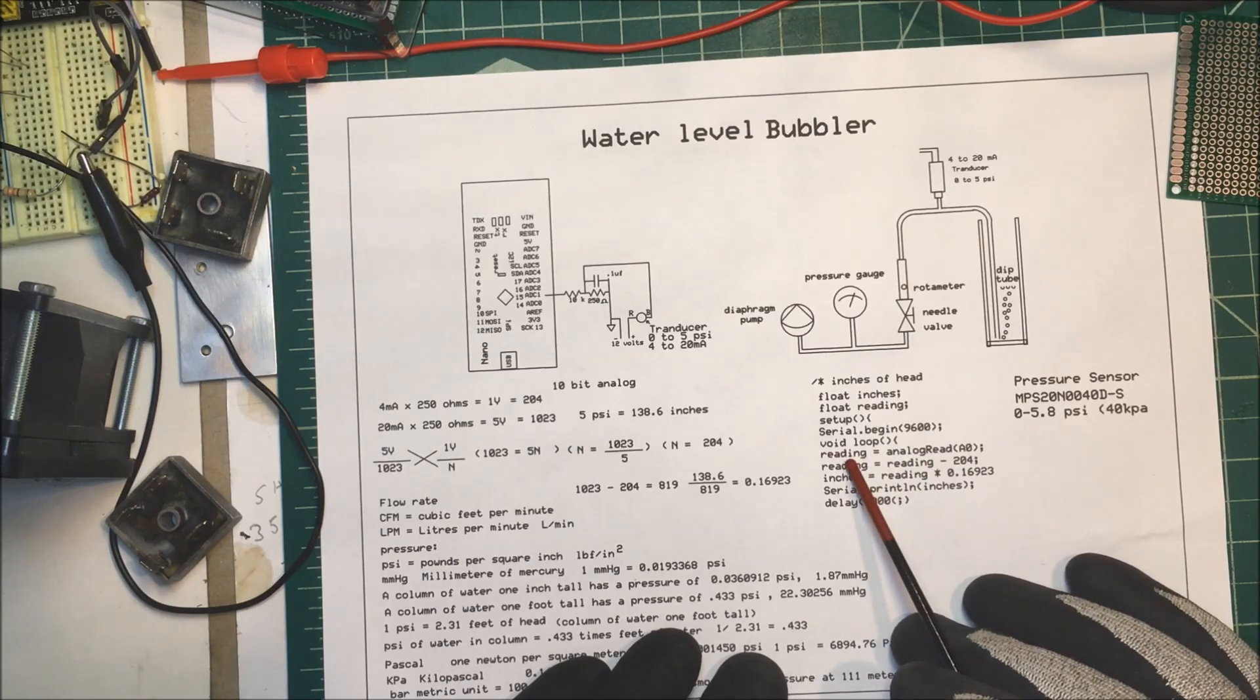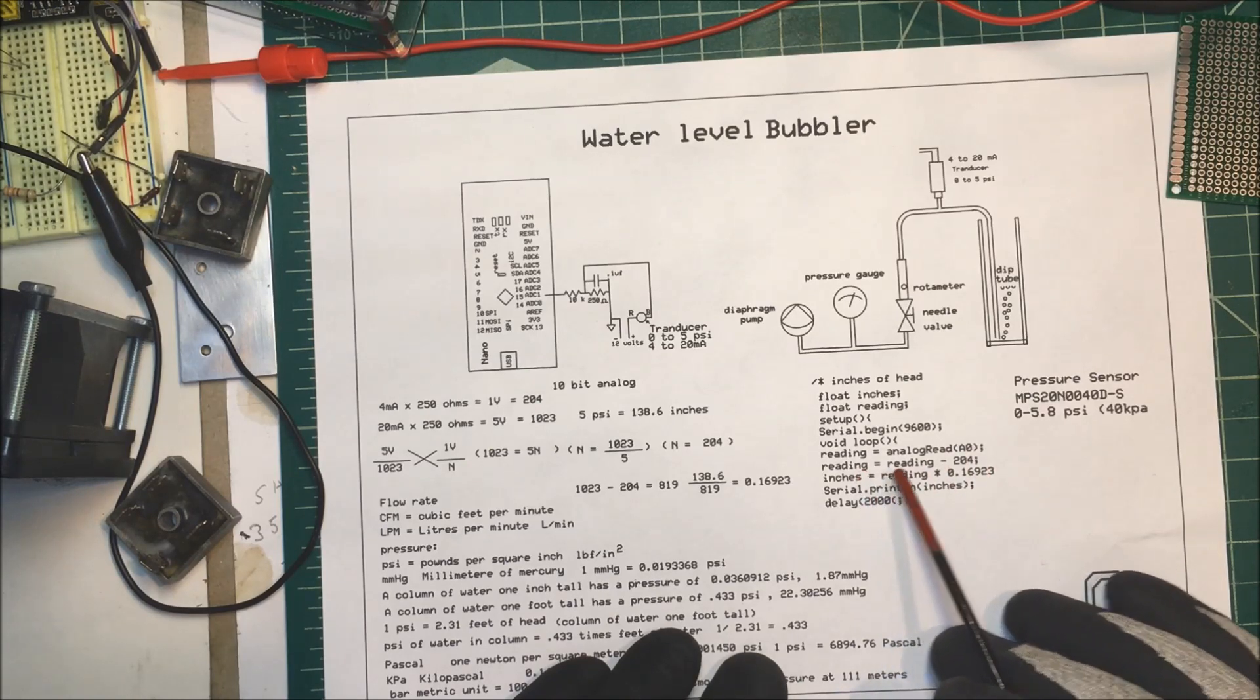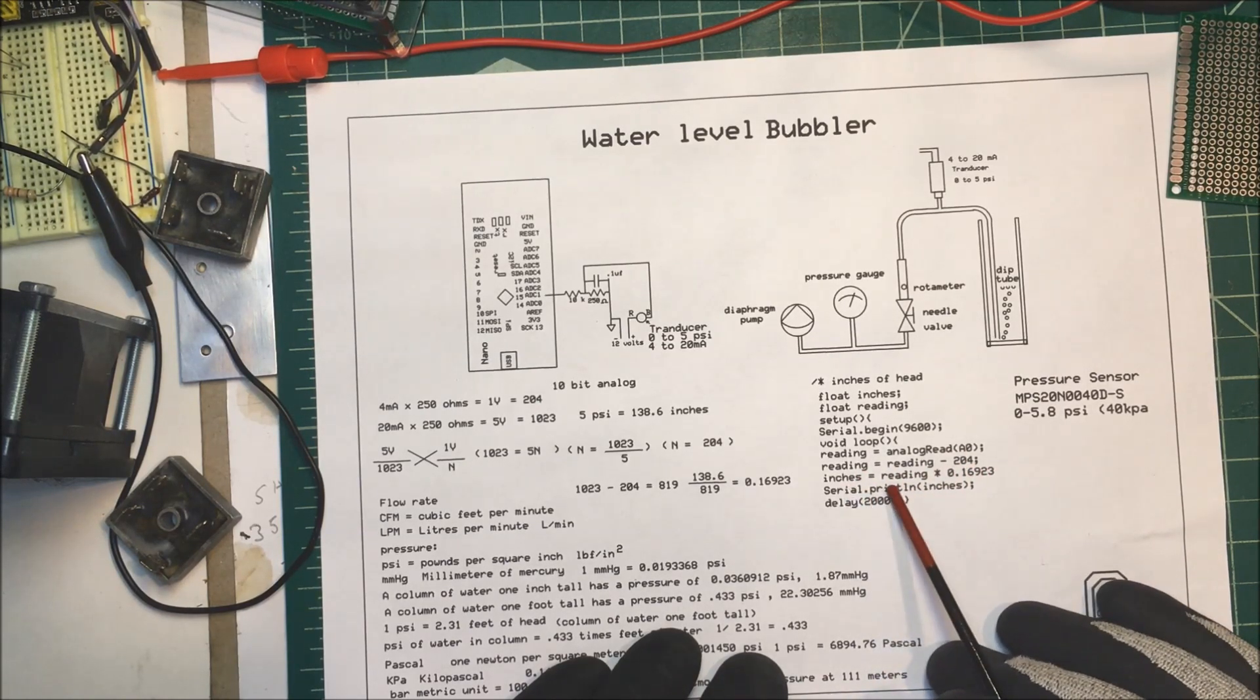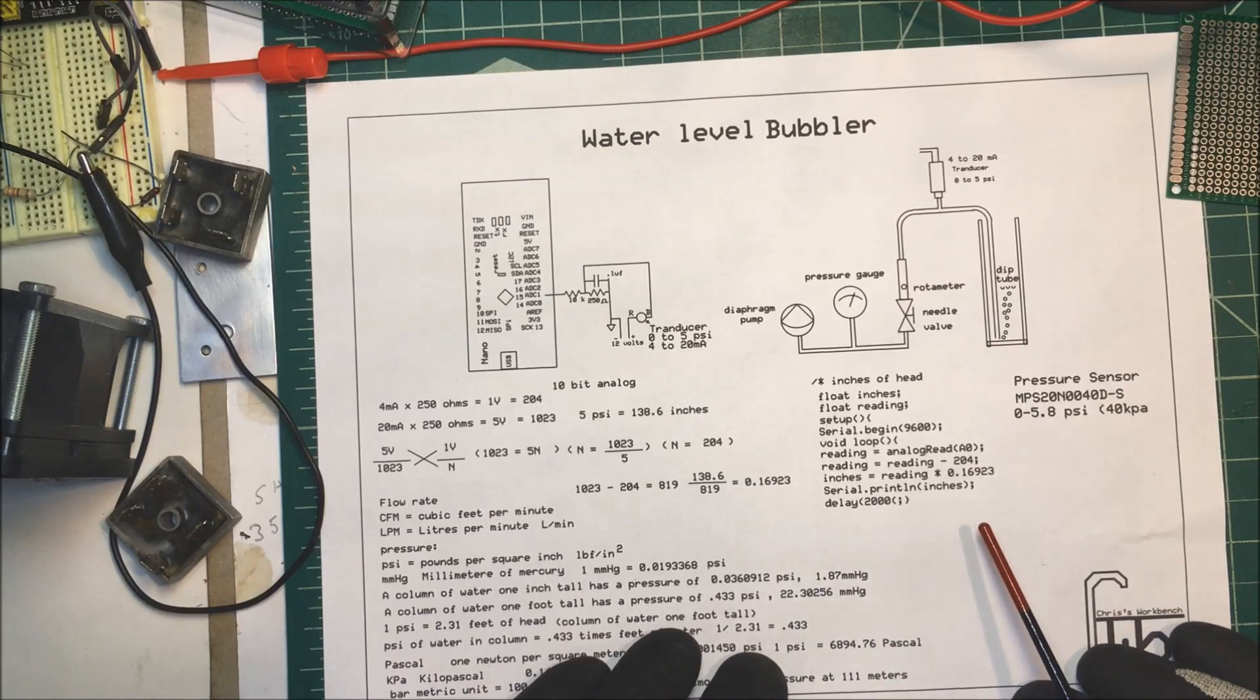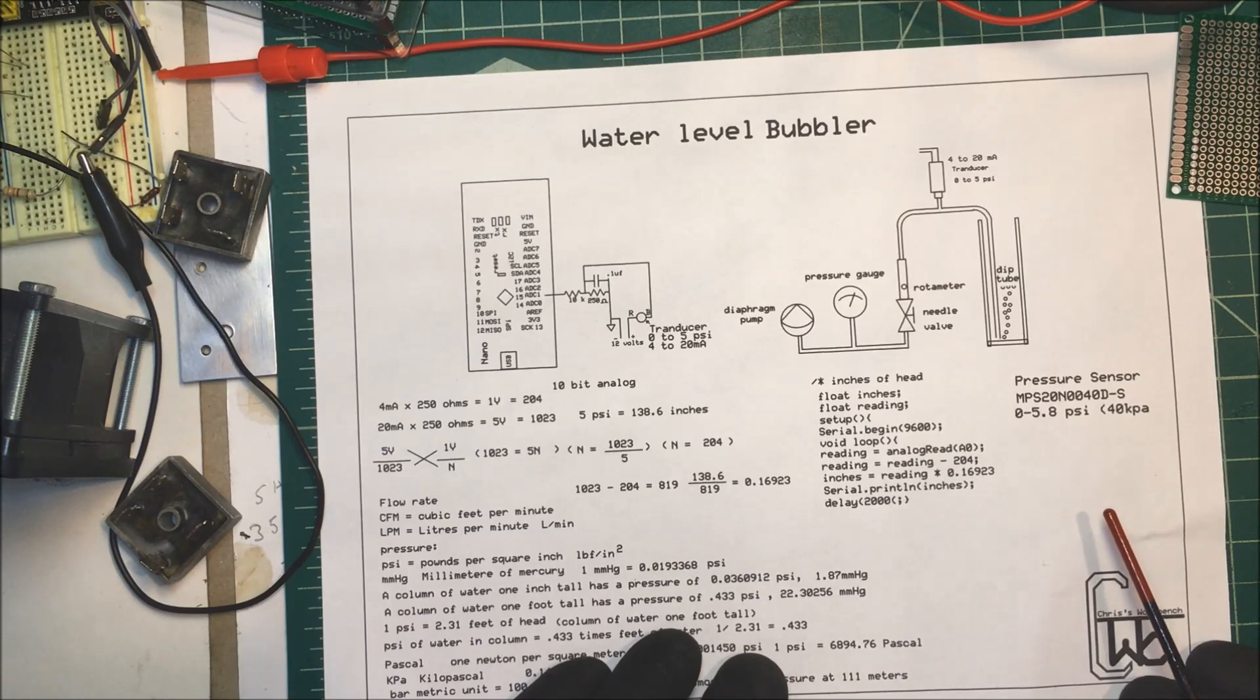And then all we need here is readings here is going to be equal to the analog read on A0. And readings are equal to readings minus the 204. And then inches are going to be equal to the readings times 0.16993, our factor over here. And we're going to serial print that, and then we're going to delay by two seconds.